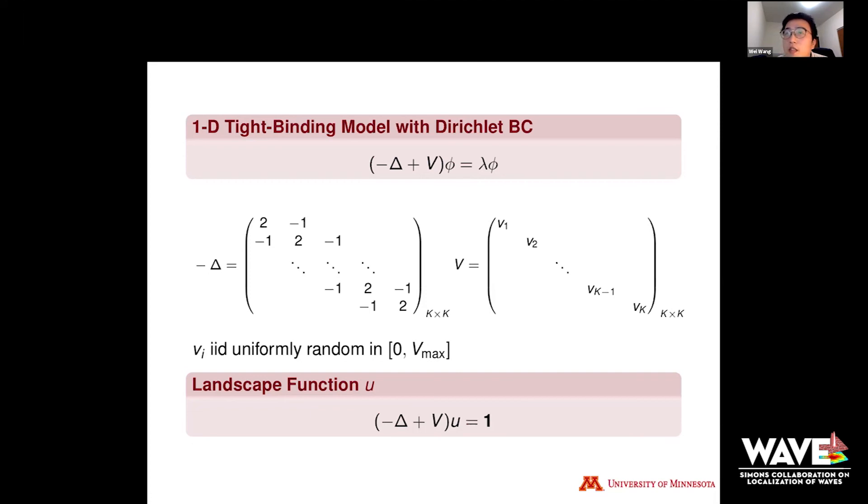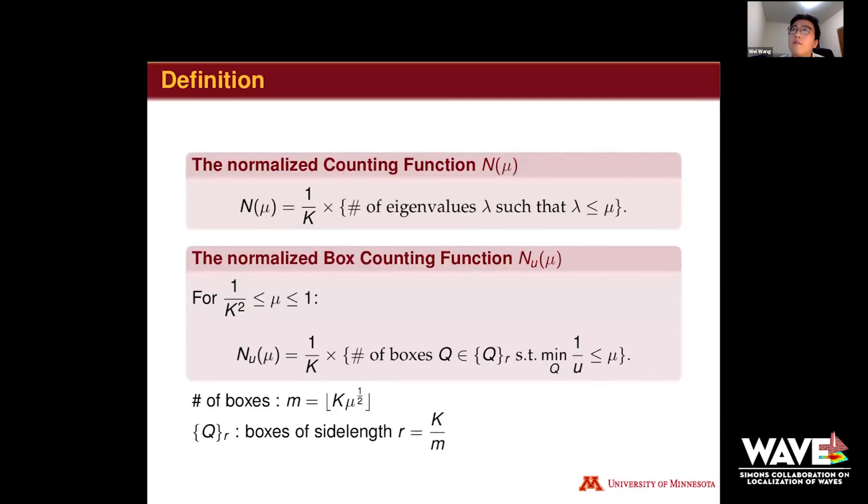We can define the landscape functions. Here's the landscape vector based on these equations. The U is k by 1 vector. In previous presentation, Shi Wen introduced the definition of the counting function and box counting function. So here I use the same definitions, and N_μ counts the number of eigenvalues no more than μ, divided by the matrix size k.